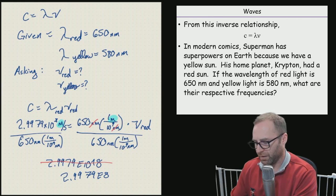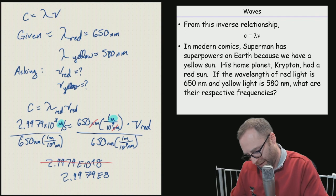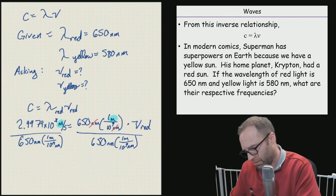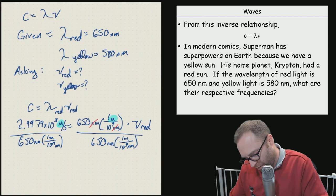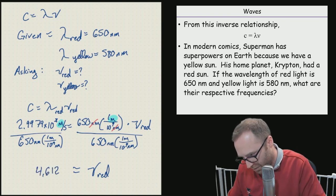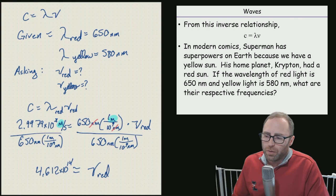If we put this in said calculator, 2.9979E to the eighth divided by 650 divided by 10 raised to the nine, I ended up with an answer. I came up with 4.612 times 10 to the 14th.